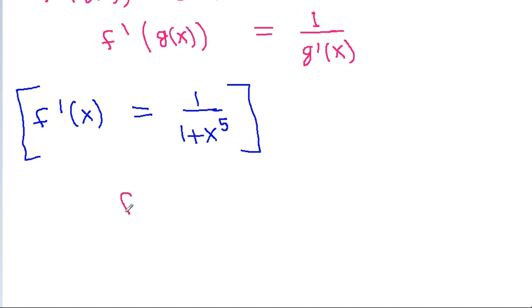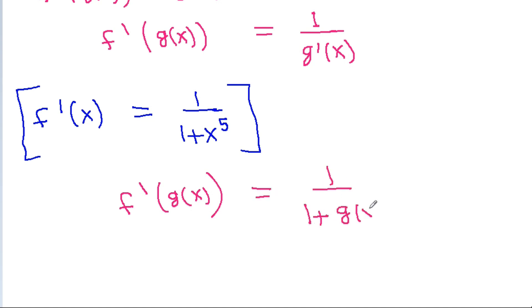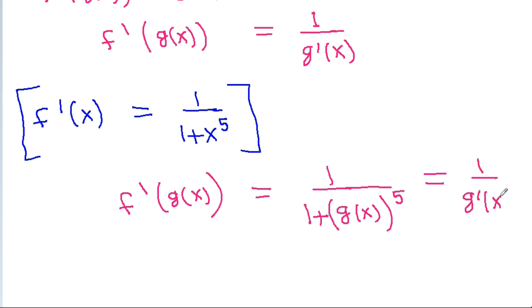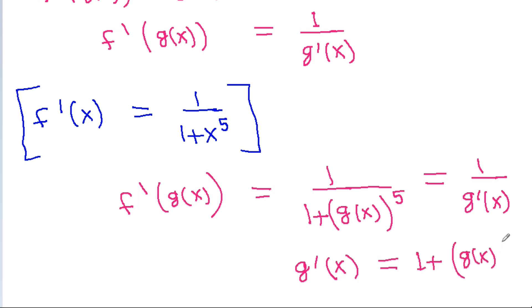So f prime of g(x) will be equal to 1 by 1 plus x power 5, and that is equal to 1 by g prime x. So we can get g prime x is equal to 1 plus x power 5.